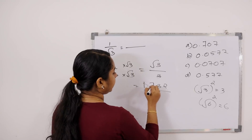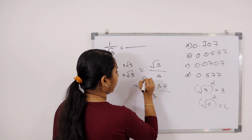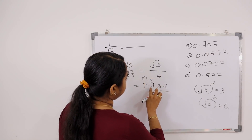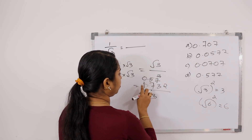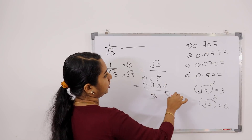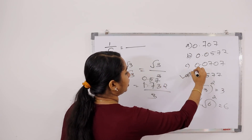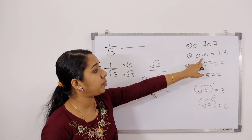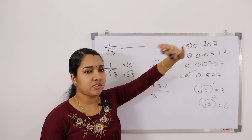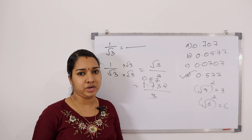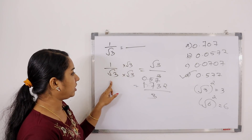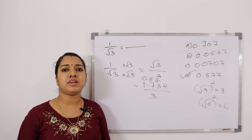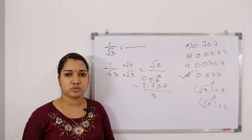Calculating 1.732 divided by 3: 0.577. So 1 by root 3 equals root 3 by 3, which is approximately 0.577.